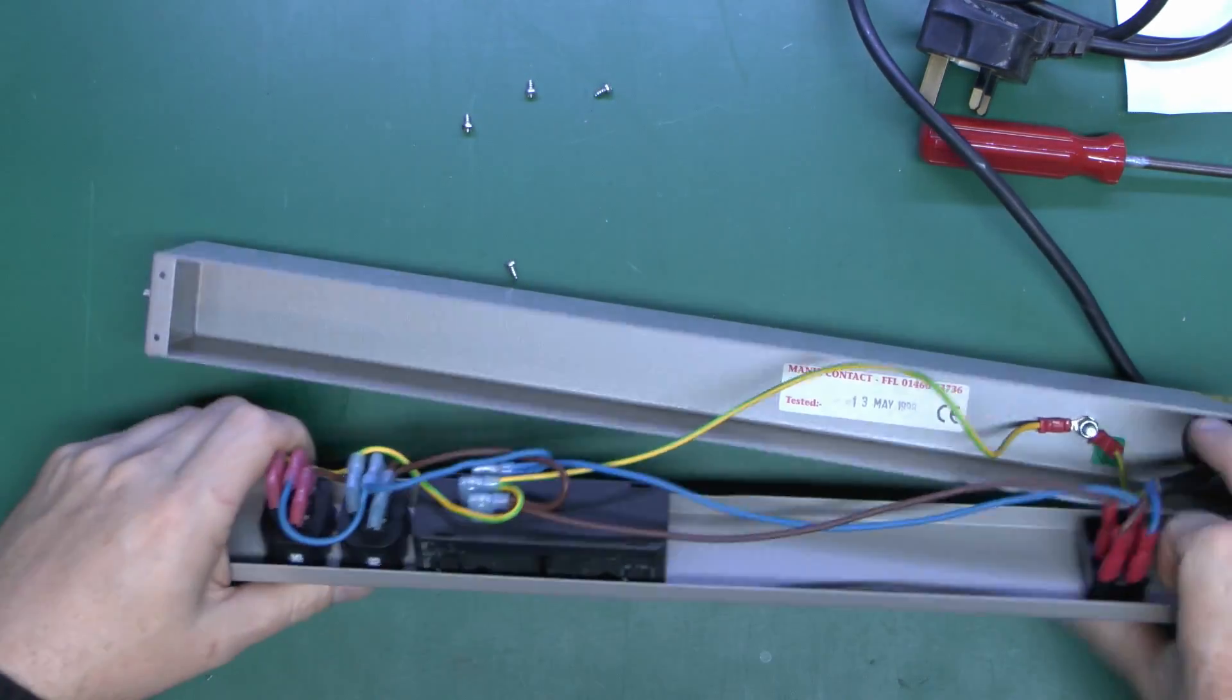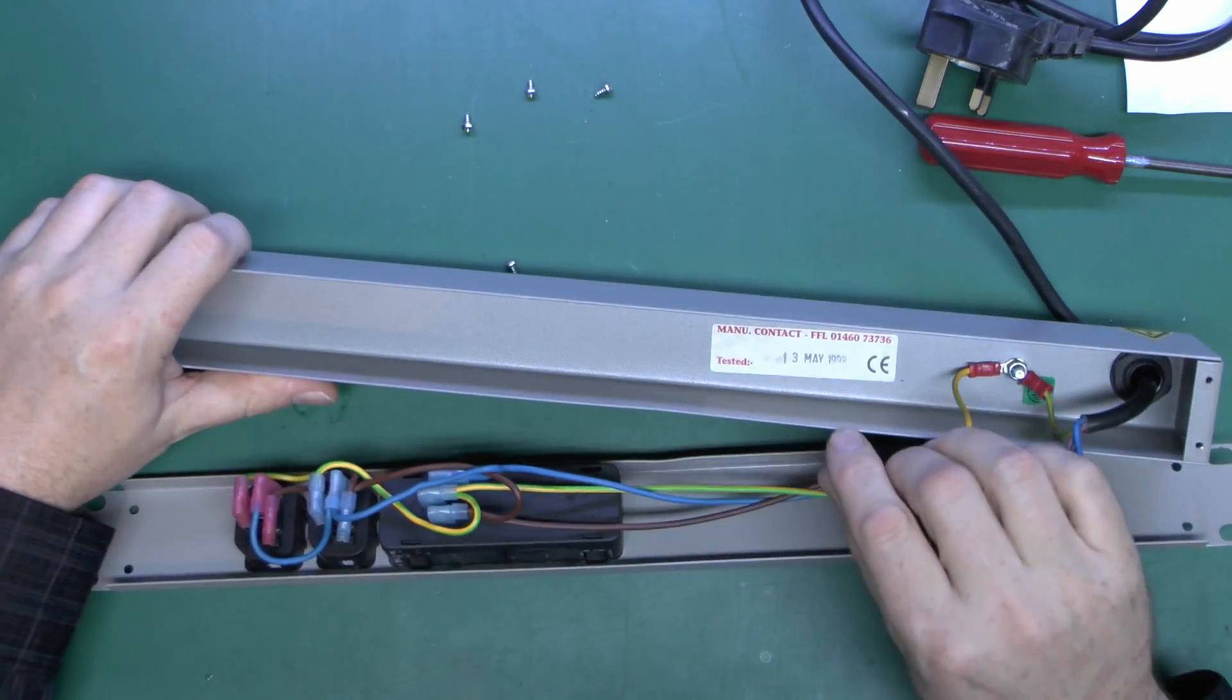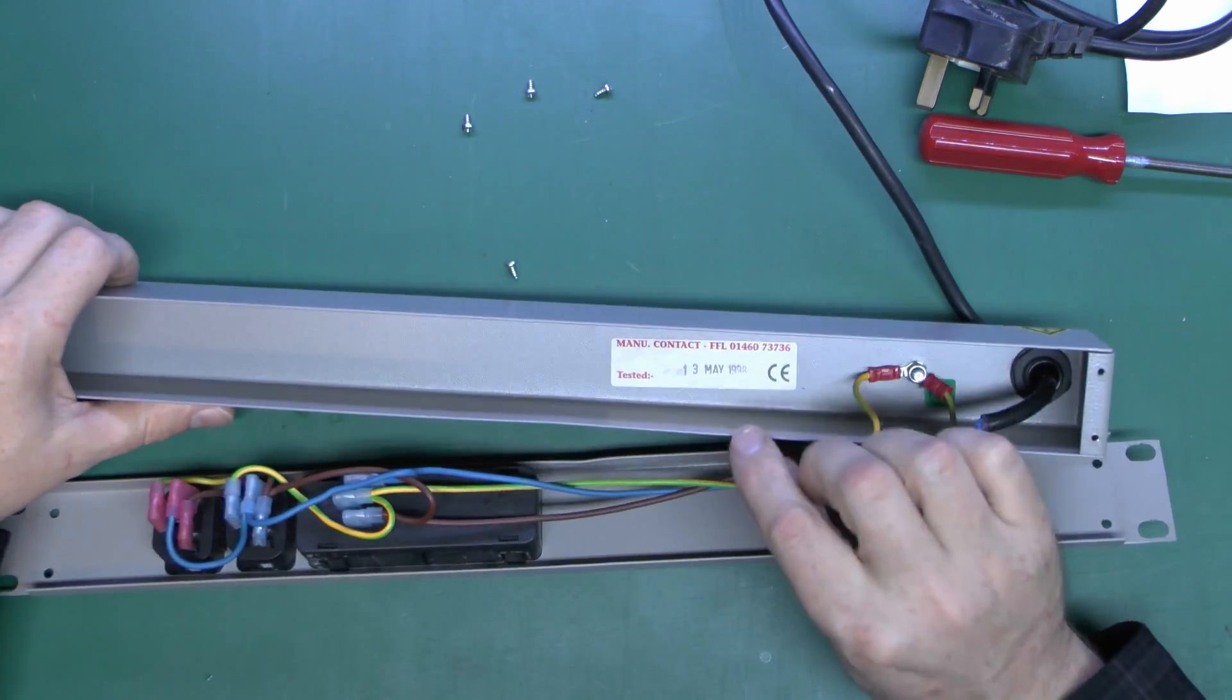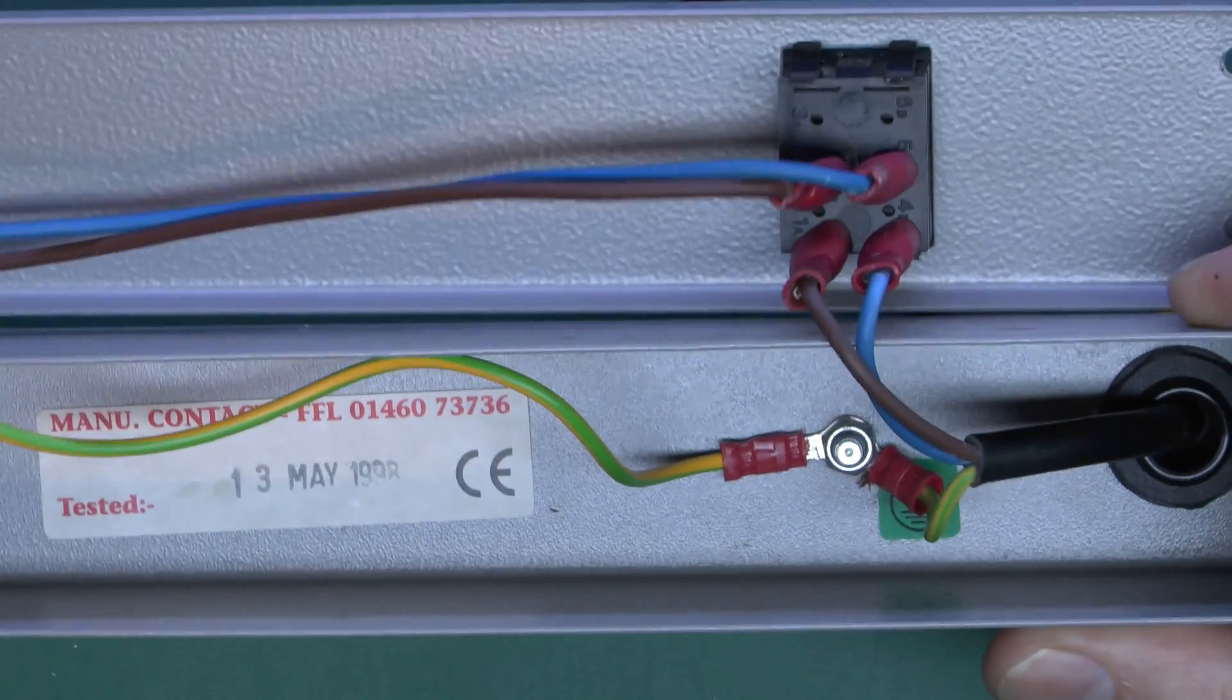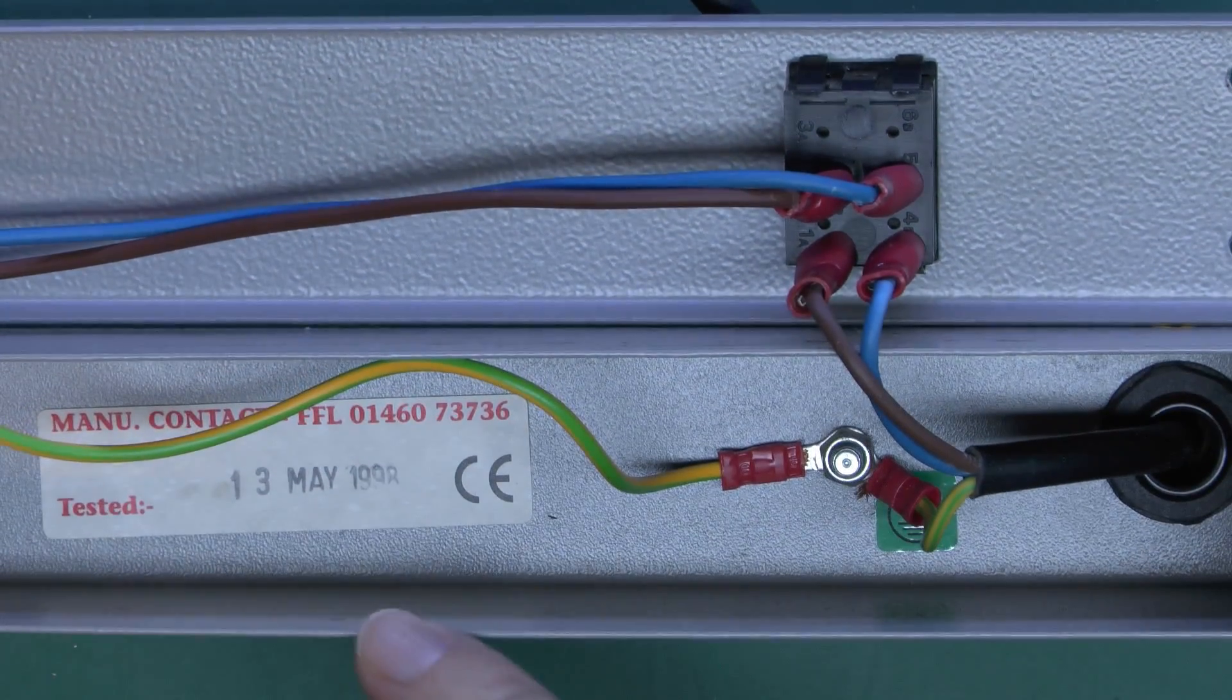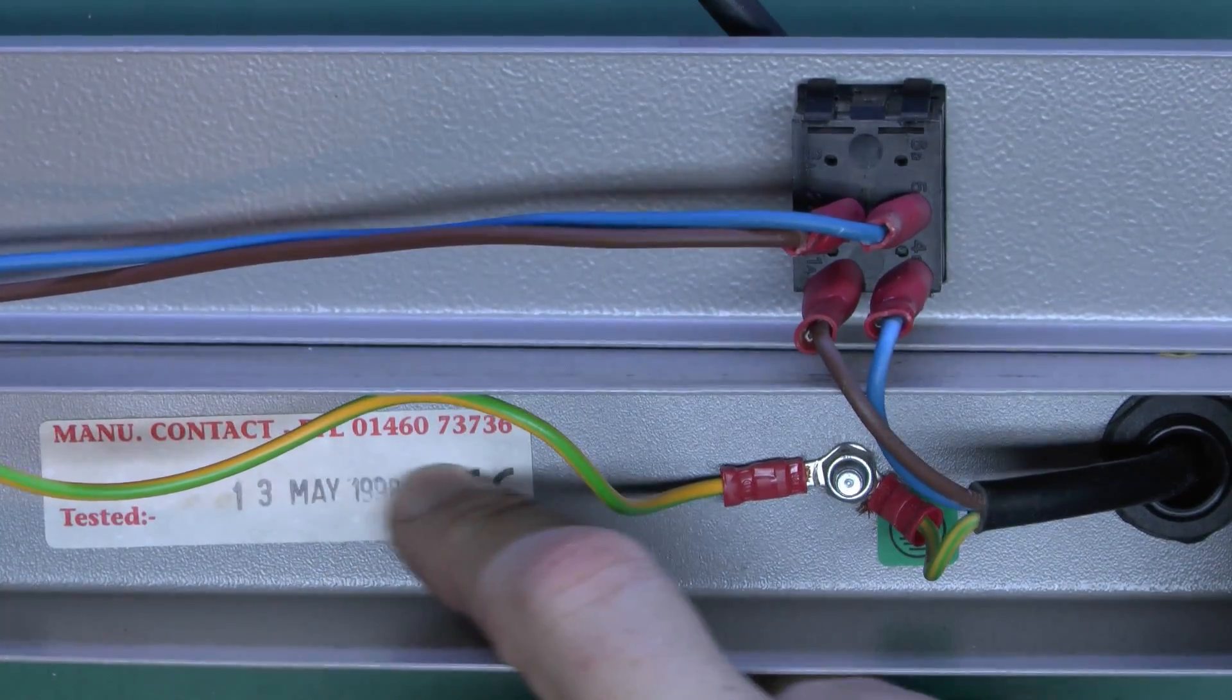So let's see what we have inside. Well, we've got a date here for a start, which is something. So the date there shows as the 13th of May 1998. So a closer look there. So there's your date, 13th of May 1998. And FFL, whoever they were or are.